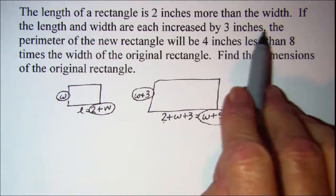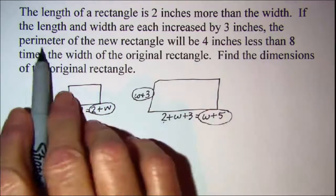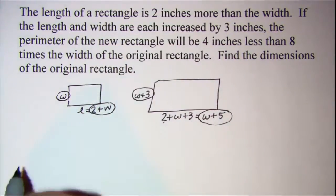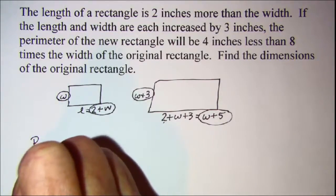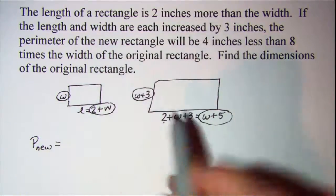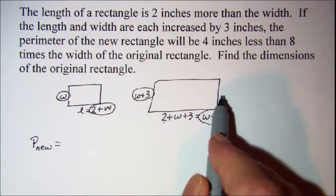Then continuing this sentence, it says the perimeter of the new rectangle. So the perimeter of the new rectangle is going to be the sum of all four sides.